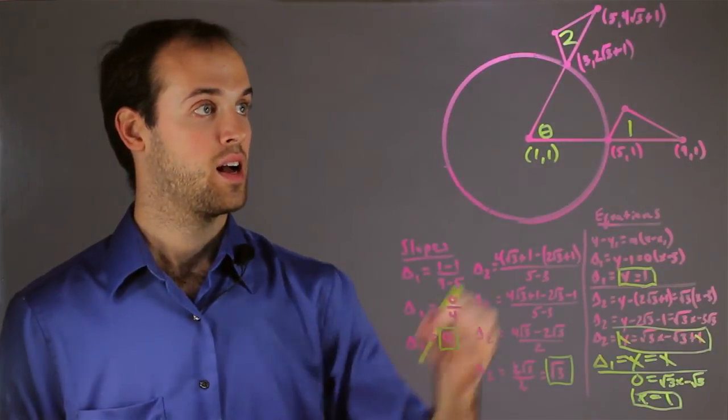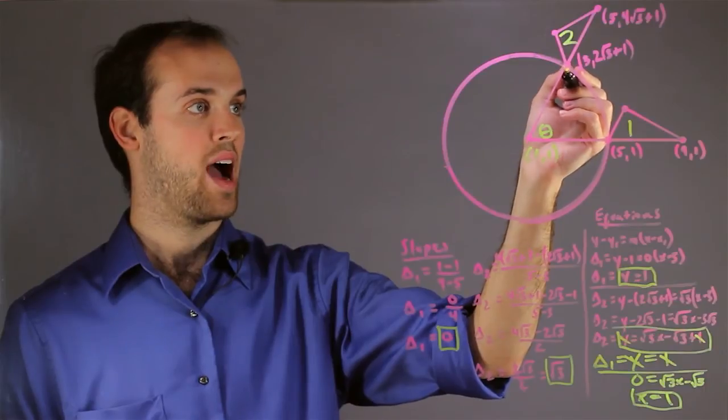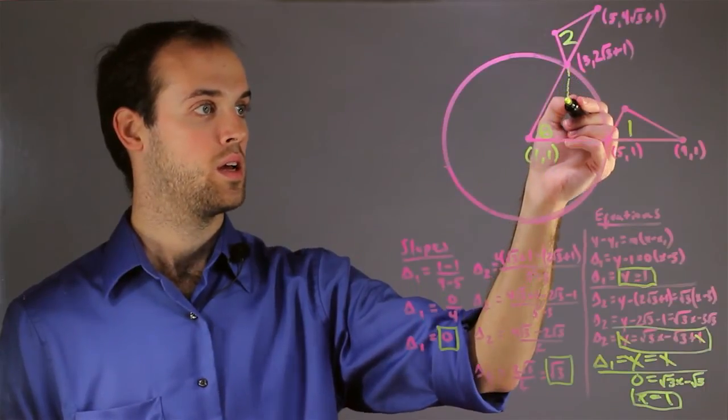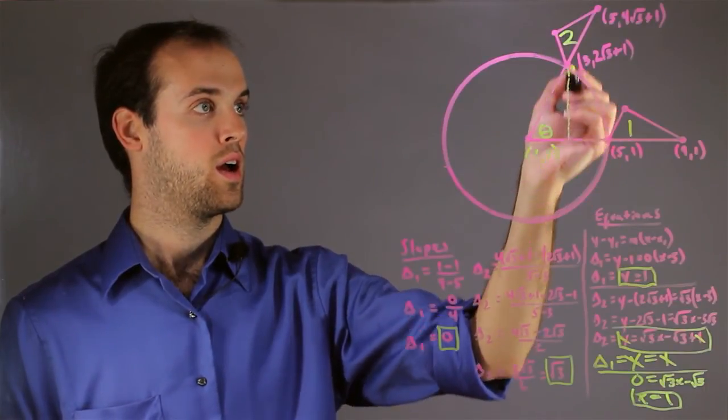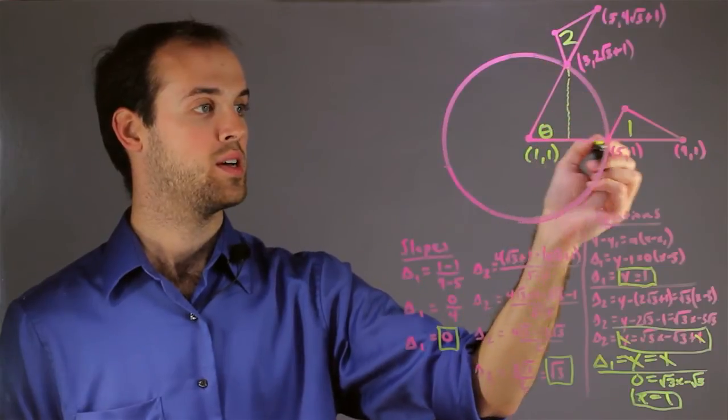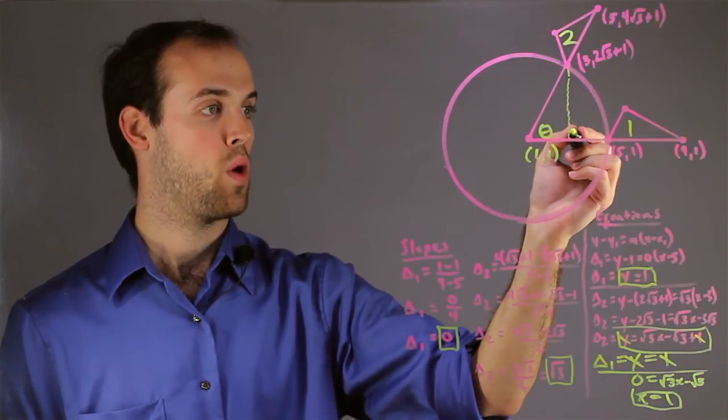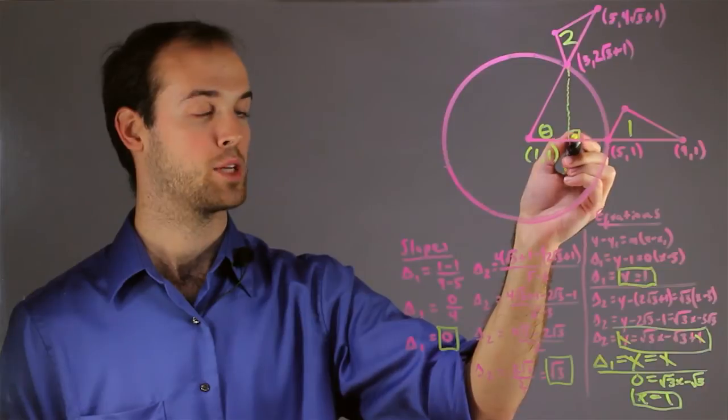From there, I'm going to drop an altitude down from the base of triangle 2 down to the extended base of triangle 1. Because it's an altitude, I know that that must be a right angle.